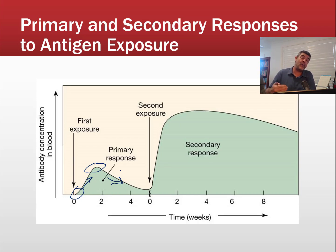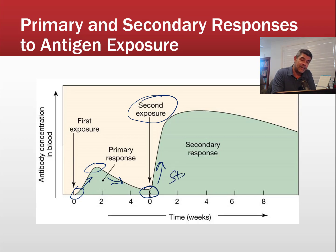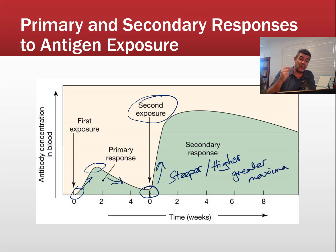On re-exposure, with a second encounter of the same pathogen, we're not starting from zero — memory cells are already present with the correct antibody. When triggered, the clonal response is much more rapid, so the second graph is much steeper. It's also much higher, rising to a greater maximum. The secondary exposure therefore produces a much quicker, much stronger response compared to the primary response.